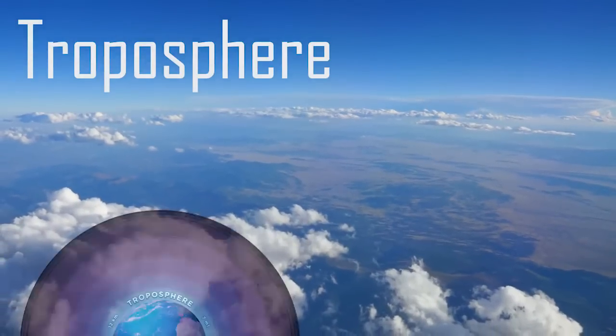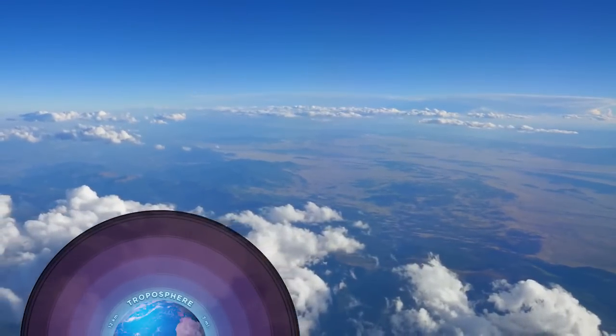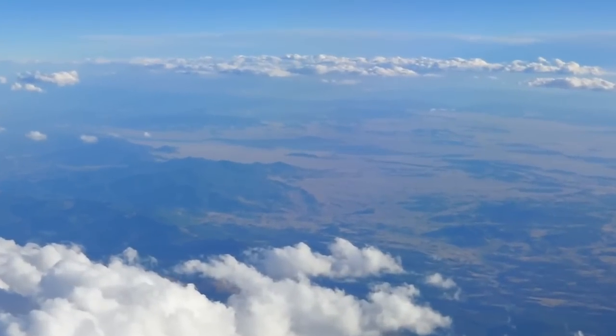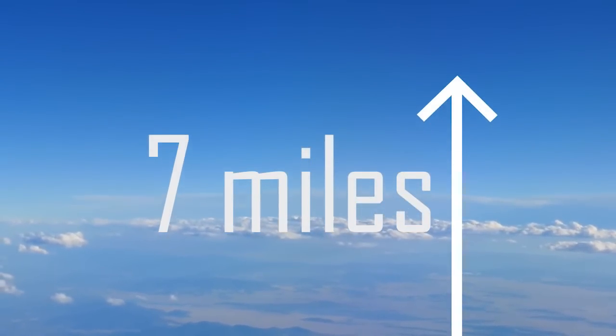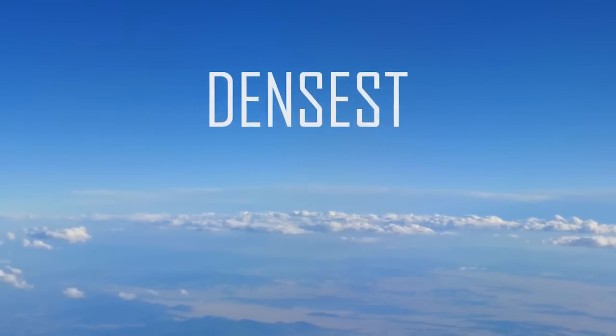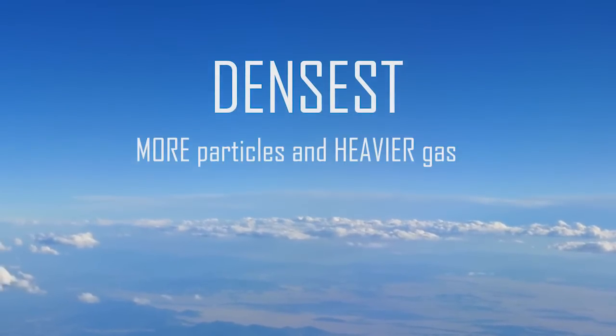The troposphere is the first layer of Earth's atmosphere. It starts on the planet's surface and stretches up to an average of seven miles in the air. This layer is the densest, meaning it has more particles and heavier gases than the other levels.